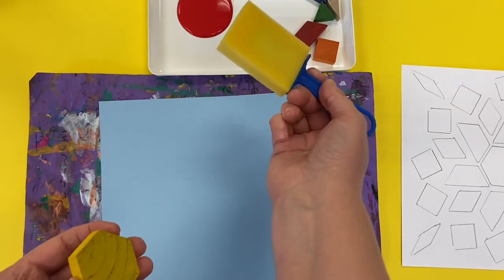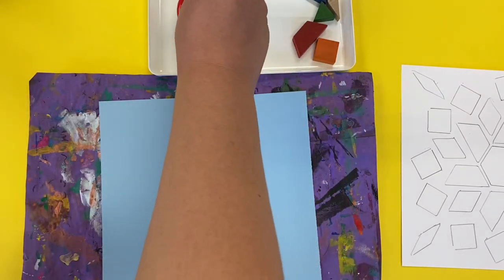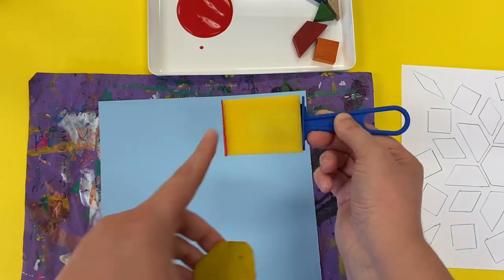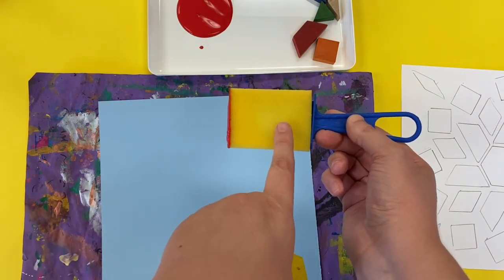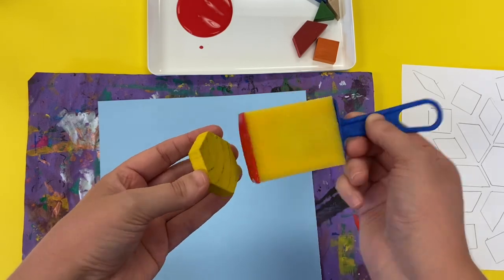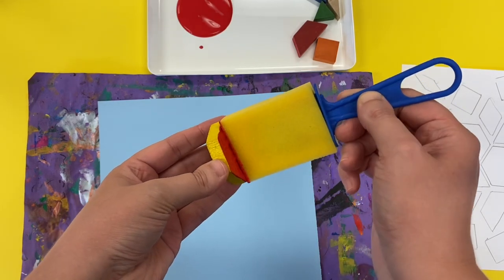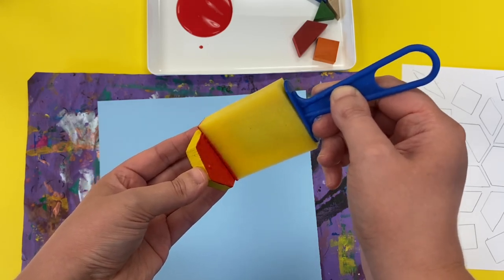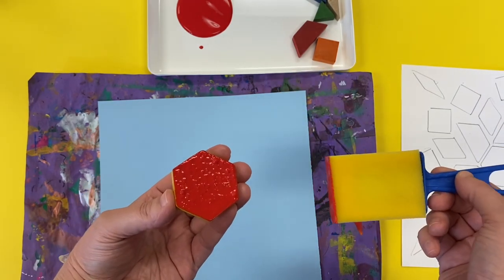I'm going to dip my foam brush into the paint and I'm dipping it on the end, right? I don't want to get paint on this side so much as I want to get it on the end. Then I'm just going to very gently pat that paint all over my shape like that.